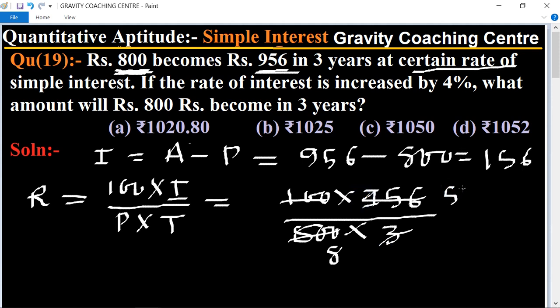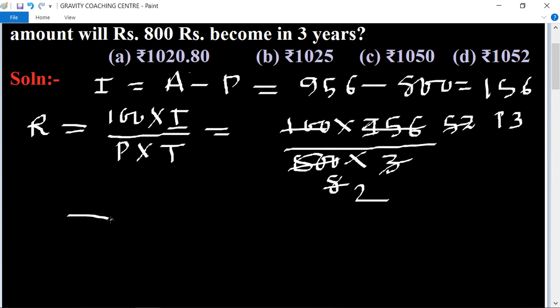3 is 15 and 5, 2 is 56, level of 2, 4, 4, 4, 2, 8. And 13 equal to 13 upon 2 equal to 6.5 percent per annum is the rate. And according to question, new rate.